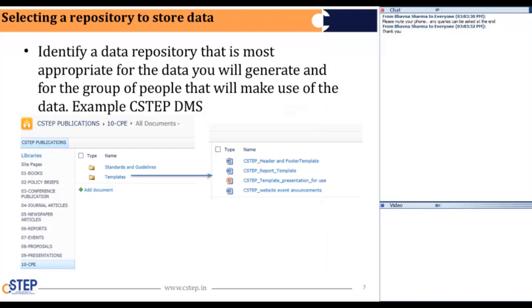Selecting a repository to store data. Identifying the data repository that is most appropriate for the data you will generate and for the group of people that will make use of the data. For example, our C-STEP DMS. That is a good example for our organization to have because a lot of the organizations may not have a certain portal where they are storing or selecting their data. So, we are fortunate to have this portal where we store all our C-STEP documents.